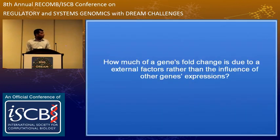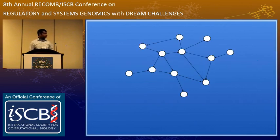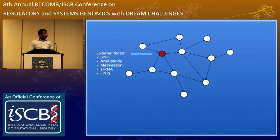What I'm interested in is how much of a gene's fold change is due to external factors rather than due to the network effect. I will describe what I mean by the network effect. Assume that you have some kind of undefined network inside a cell. We know that expressions of one gene affect the expressions of other genes, so they form a network within the cell. If you have an external factor that affects the expression of one of the genes, say you have siRNA targeting that gene.